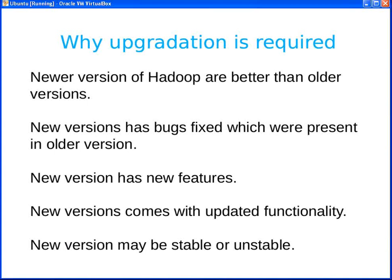Along with bug fixes, newer versions may have new features. For example, when discussing name node failure, Apache is planning to introduce two name nodes. Currently we have one name node, which is a single point of failure — if it goes down, the entire Hadoop cluster goes down. With two name nodes, if one goes down, the second will be fully operational and capable of handling all requests.